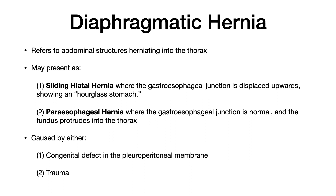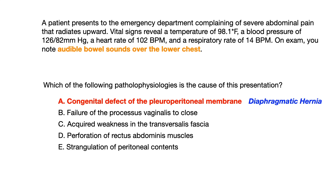Typically on your exam, it's going to be a congenital defect. Going back to the practice question, audible bowel sounds over the lower chest really only happens when abdominal structures pathologically enter the thorax — and that is, by definition, a diaphragmatic hernia. The other types of hernias don't have this finding.